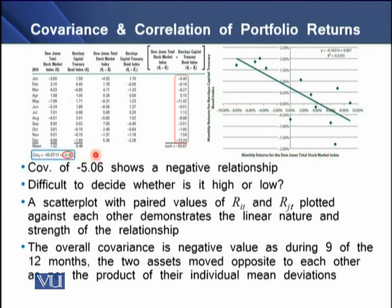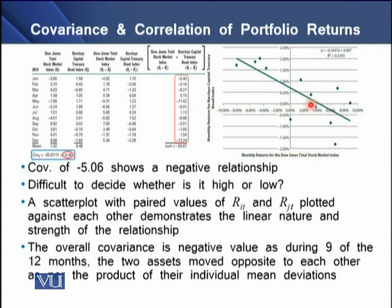This negative value of covariance shows a negative relationship between the stock market and the bond market. However, it is difficult to decide whether minus 5.06 as a covariance is a high or low value, as we have no predefined benchmark. To determine this relationship further, we have a scatter graph with paired values of R_IT and R_JT, where R_IT represents stock market values and R_JT represents bond market values, demonstrating the linear relationship between the two.